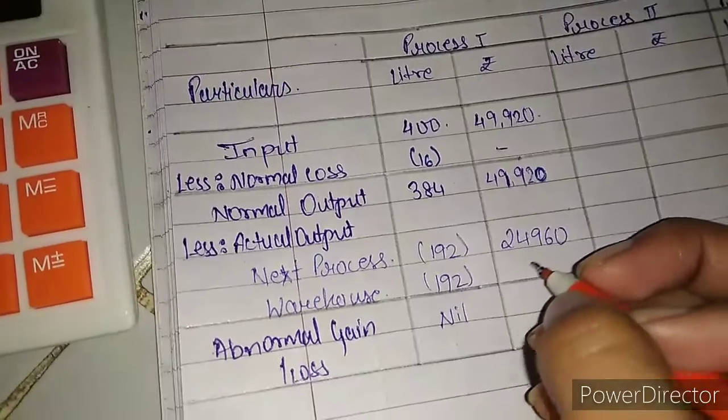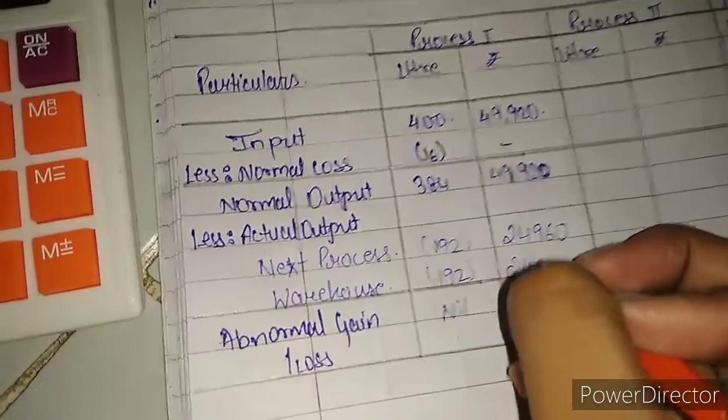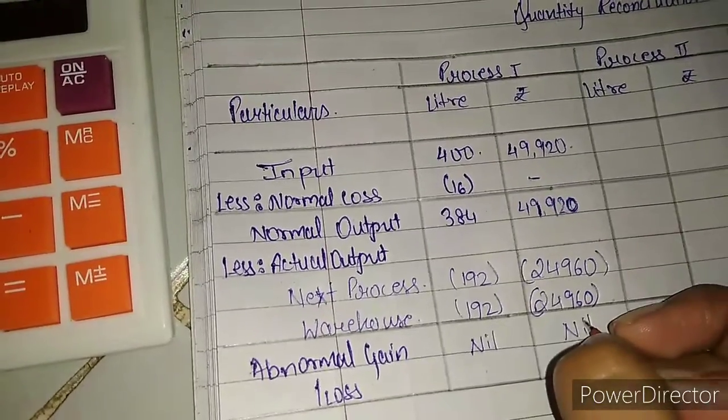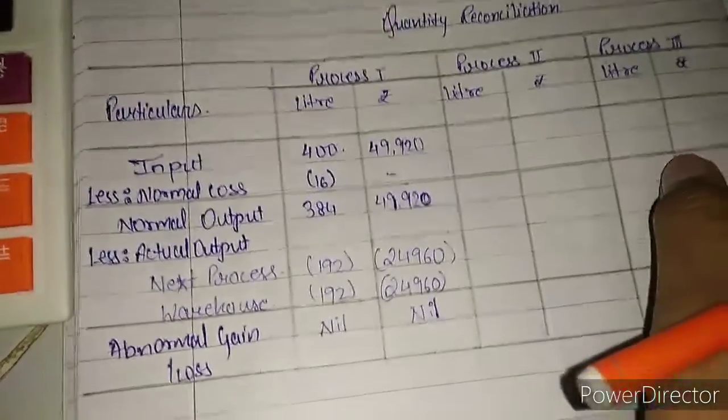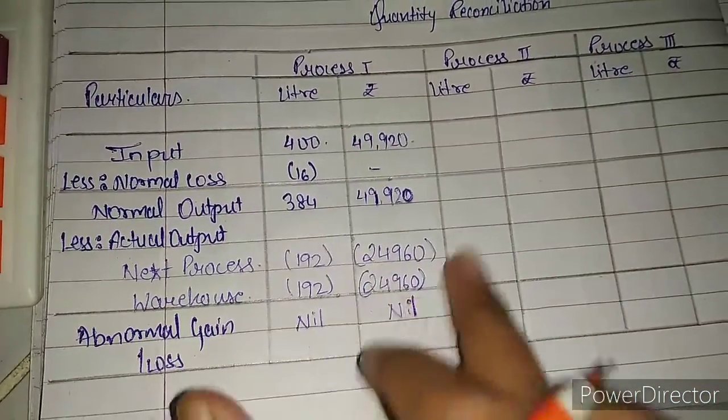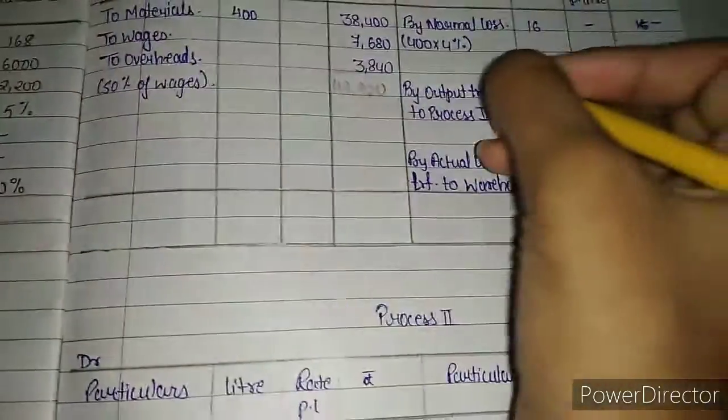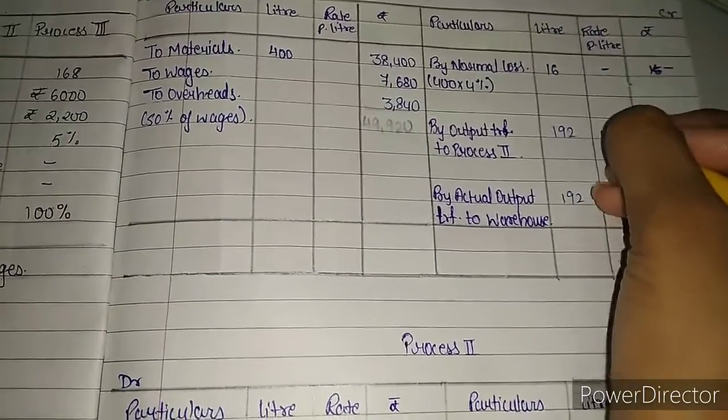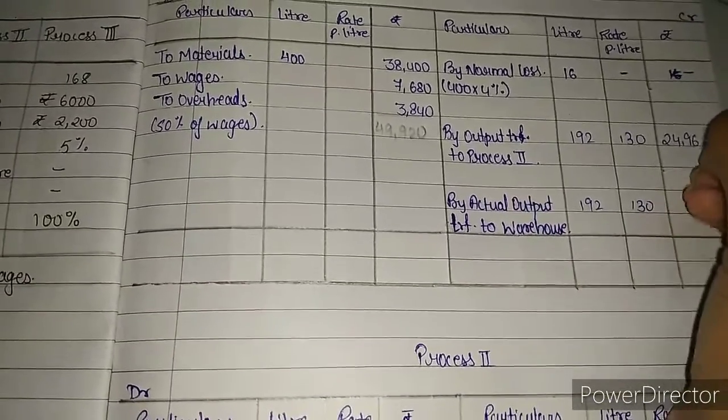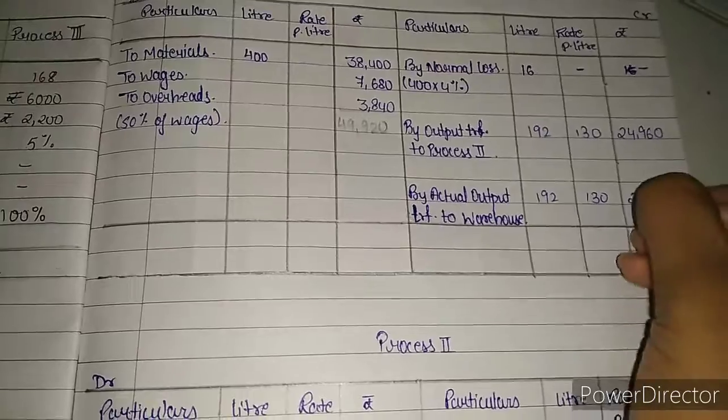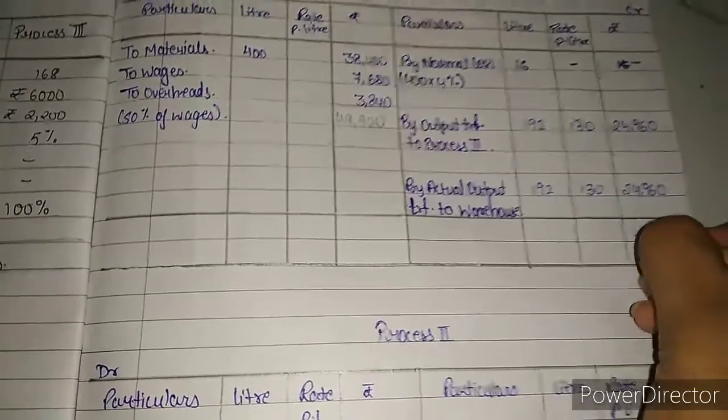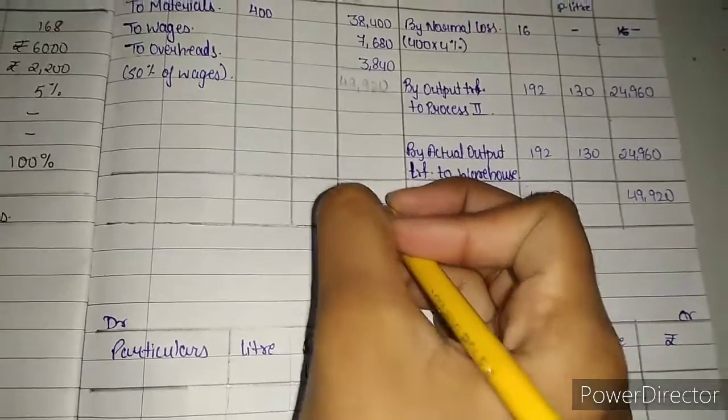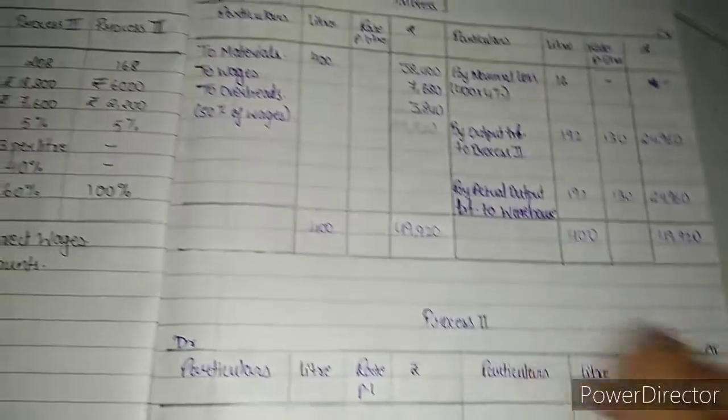Dividing by 192 for each, we get 192 units for next process and 192 for warehouse. 49,920 divided by 384 equals 130 per unit. 130 into 192 gives 24,960 for each transfer. This tallies: 192 units at rate 130 equals 24,960, and the same for warehouse. The total is 400 units and 49,920. Process 1 is completed.